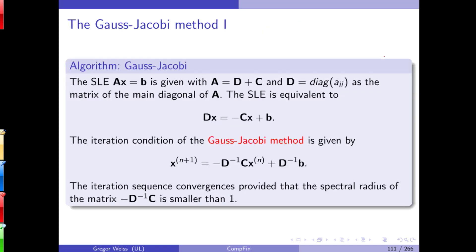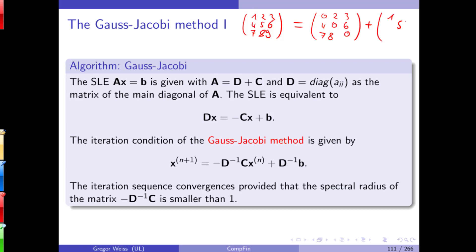The Gauss-Jacobi method is very simple. Remember the system A times X equals B. For any matrix A you can write A as the sum C plus D, where D is a diagonal matrix. For example, a 3×3 matrix with entries 1 through 9 equals a matrix with zeros on the diagonal and off-diagonal entries, plus a diagonal matrix containing 1, 5, 9 with zeros elsewhere.